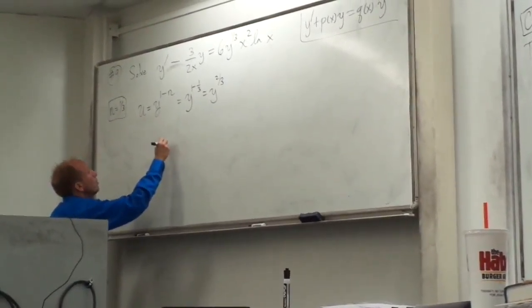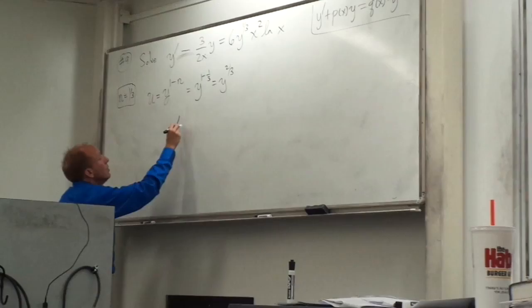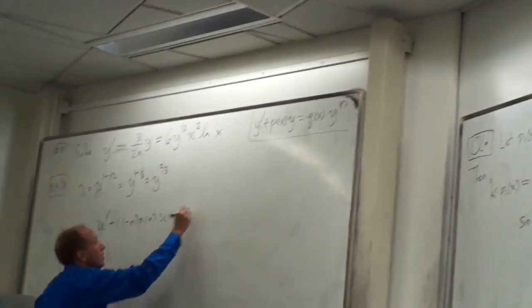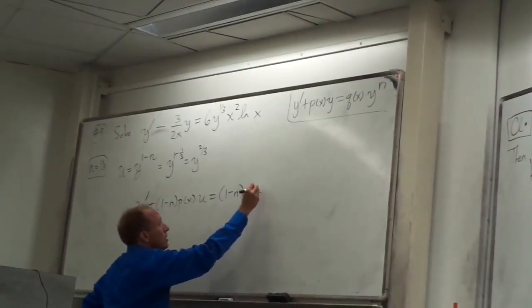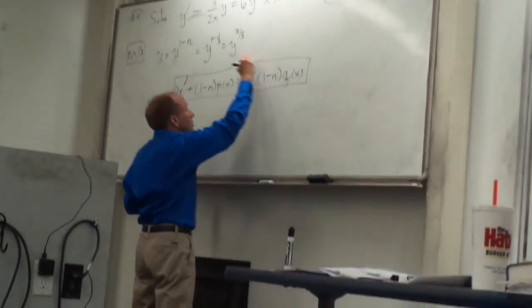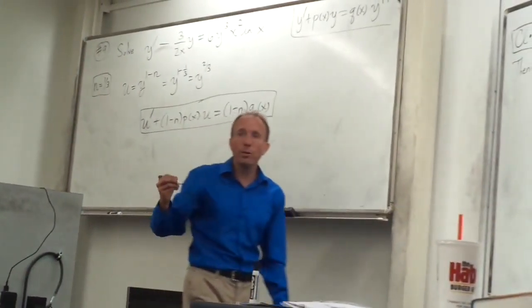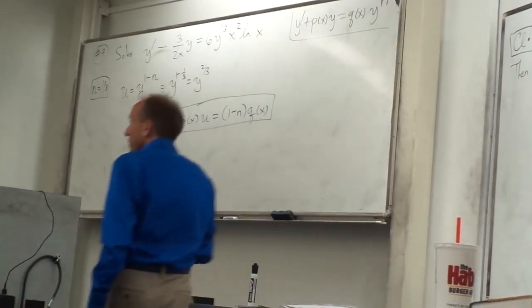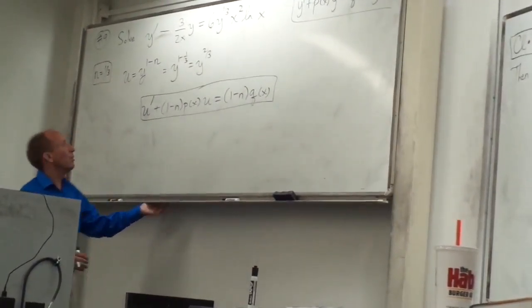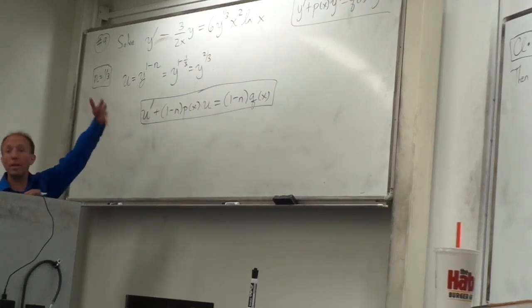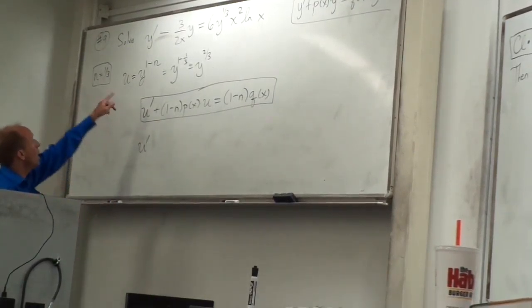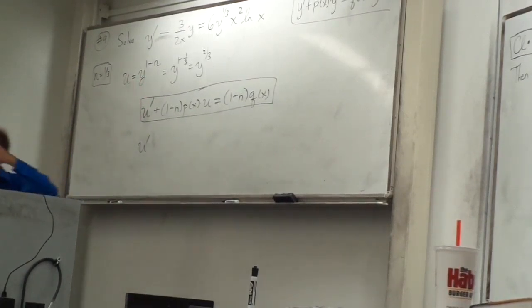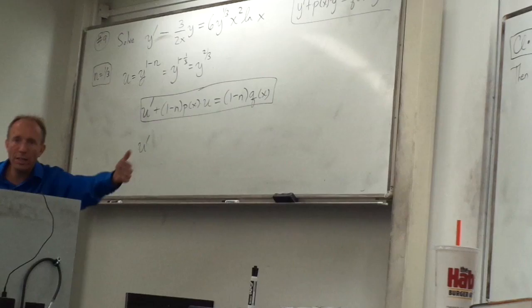The u prime plus (1 minus n). That's it — okay, this is the new equation. This one you really do need to know. Put it under your pillow every night for the next four nights. By osmosis, get it to sink in there for you. You're going to want to have that one. So let's put in all the stuff we know now. So we have u prime, (1 minus n). It's so important to get this right because this is going to affect the integration and everything that comes later.